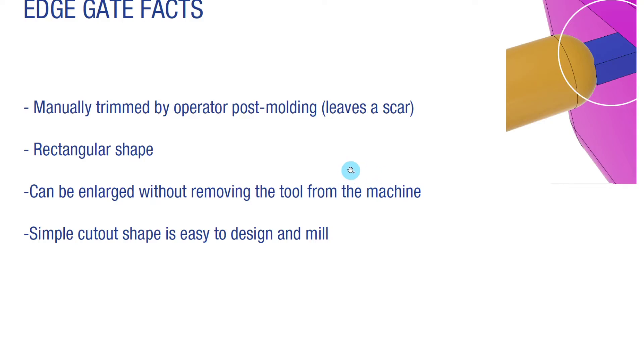Some facts about the edge gate: it's manually trimmed by operators post-molding, so that means there's an operator on the injection molding assembly line that takes a part out of the mold after it's been created and cooled, and they cut the gate from the piece, which leaves a scar.